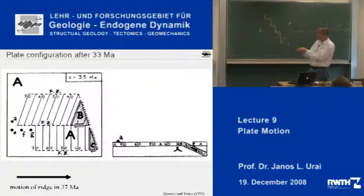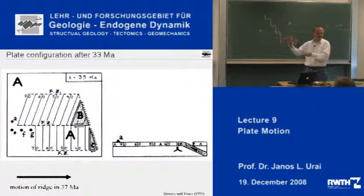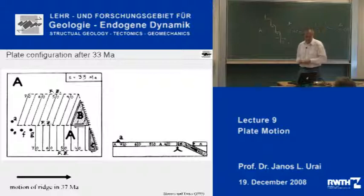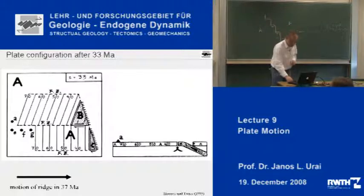In this case, because this is plate A and this is also plate A, there is no plate boundary here. If on this side you would have another plate, then there would be a boundary. So we have now understood this aspect. Let's go and have a look at velocities, and this is a little bit more complicated.